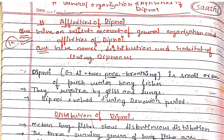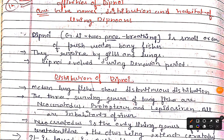Welcome back to my YouTube channel. Today's topic is general organization and affinity of Dipnoi. Dipnoi belongs to bony fishes which comes in Osteichthyes. I have told you about three classes — bony fishes and cartilaginous fishes which comes in Chondrichthyes, so this is a small order of bony fishes.